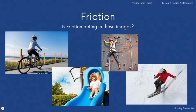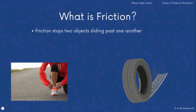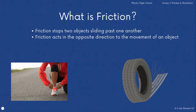Overall there is probably a lot less friction in the picture of the skier than in the picture of the cyclist. You need to understand what friction is — it stops two objects sliding past one another. There are examples of good and bad friction, which we'll talk about in a moment. Friction acts in the opposite direction to movement, which is how it ends up slowing things down.